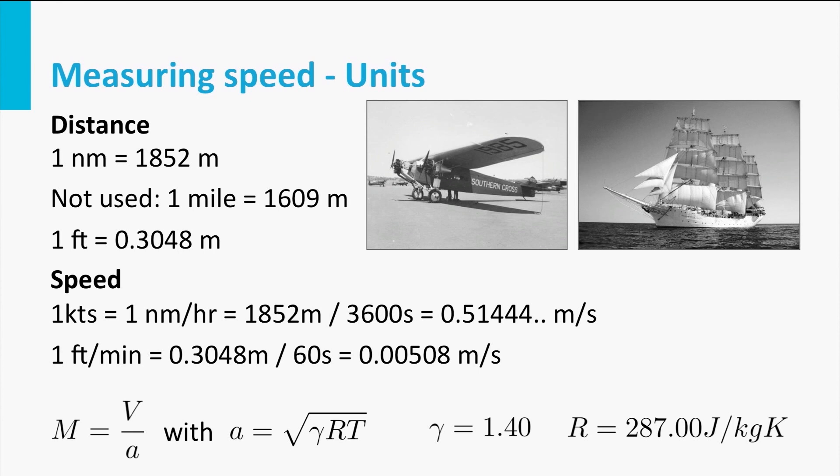For speed we see that the nautical mile per hour is used, and this is called a knot. It's 1.852 meters divided by 3600 seconds, and this results in the conversion factor to meters per second, which is 0.51444. During exercises the conversion factor will always be given. Often we do not require students to know the conversion factors, but it is good to be aware of them at this order of magnitude.